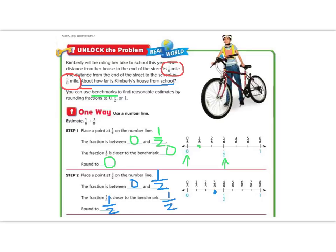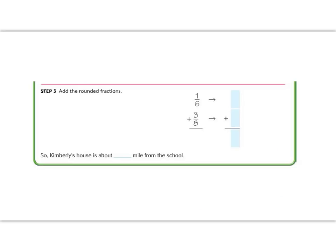I couldn't fit steps 1, 2, and 3 on my page, but you have them on your page. Step 3 says we're going to add our rounded fractions. We rounded 1/6 to 0, and we rounded 3/8 to 1/2, and 0 plus 1/2 is 1/2. So we know that she is about a half of a mile from school. That was pretty easy.